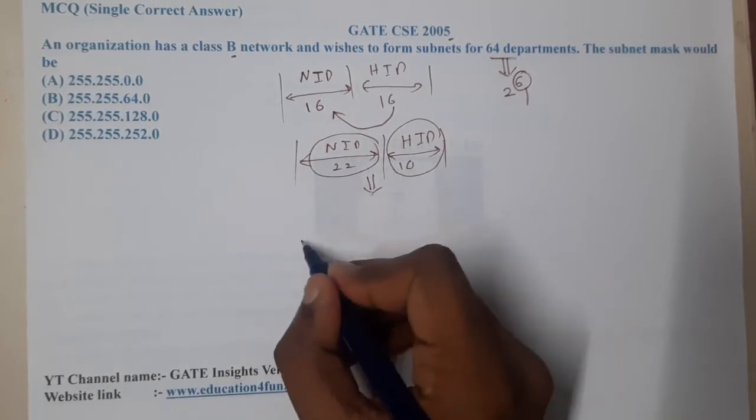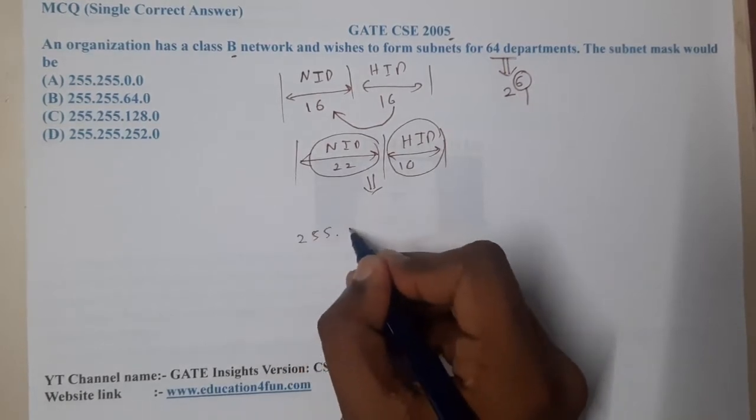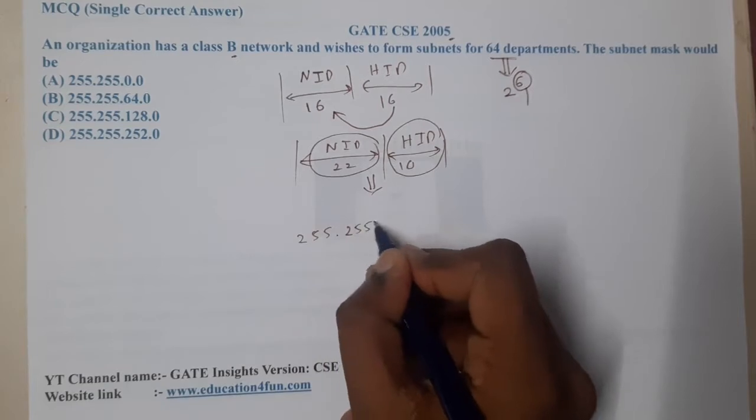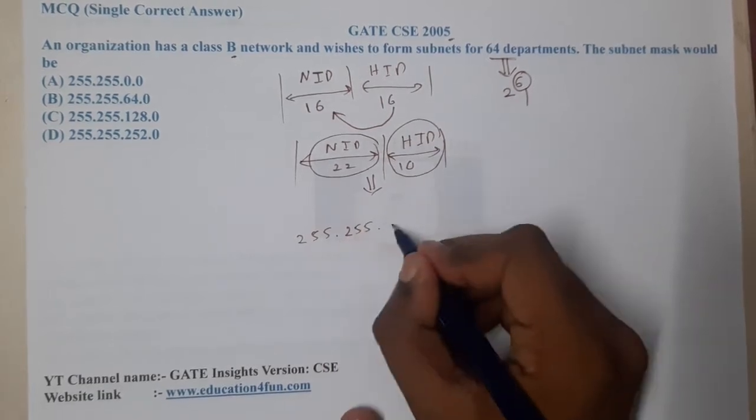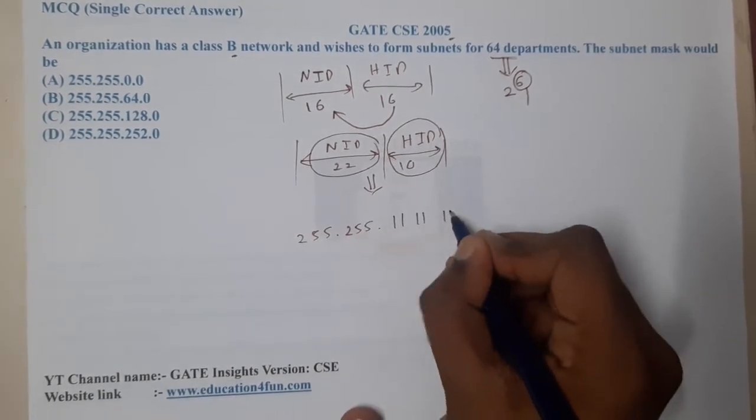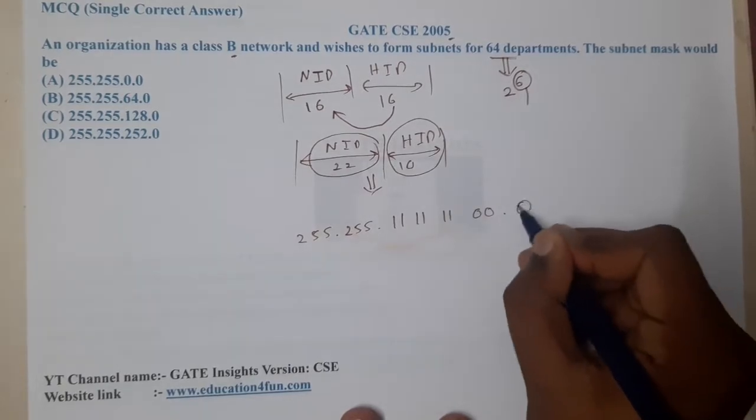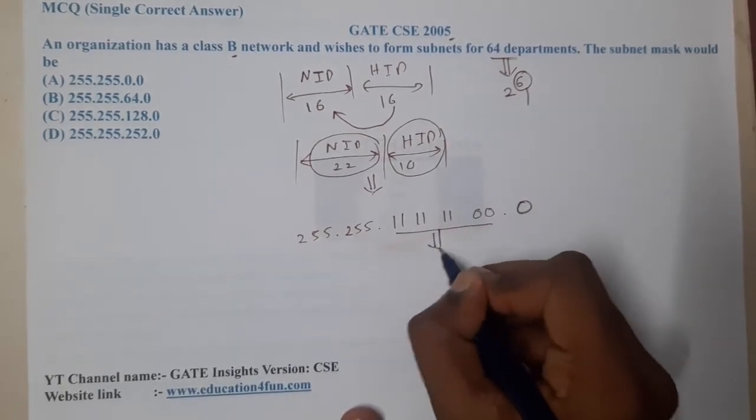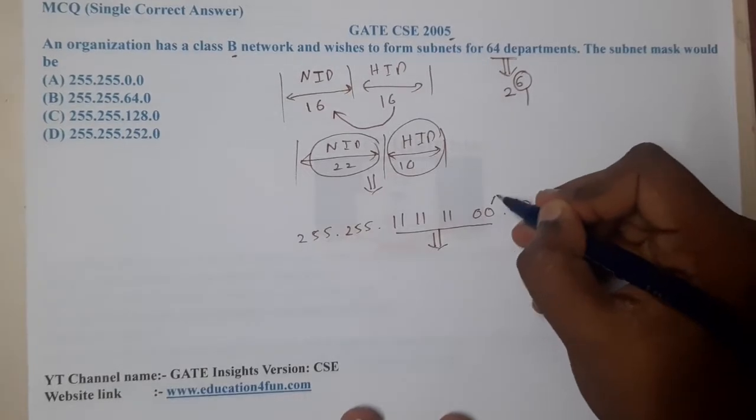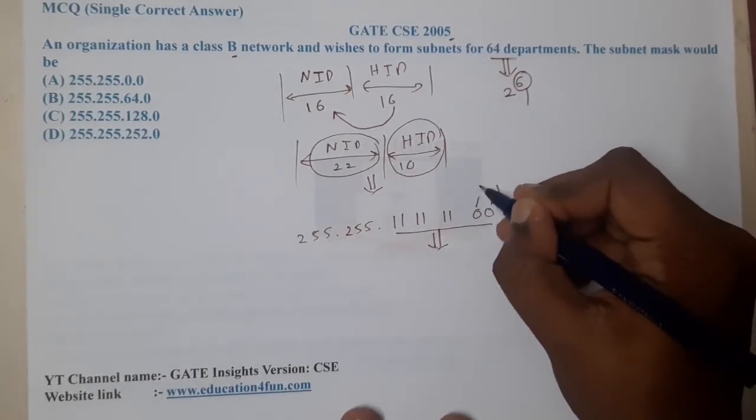Basically, first eight ones means it is 255. The next eight ones means 255, and then six ones: 1, 2, 3, 4, 5, 6, zero, zero, dot zero. What is this number? You can just map it if you want. 2 power 0 is 1, 2 power 1 is 2, 4, 8, 16, 32, 64, 128.